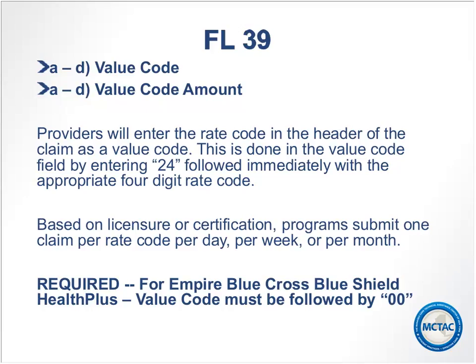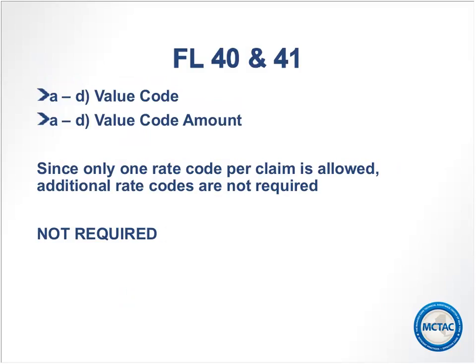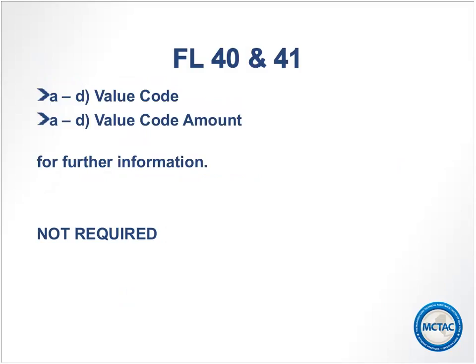Value code: no change. Code 24 must be followed immediately by the four-digit rate code. Claims should be submitted with one rate code per day, per week, or per month — it is required. For Empire Blue Cross Blue Shield Health Plus (previously known as AmeriGroup Health Plus), there must be a 00 that follows the rate code. The next value code fields are not required.